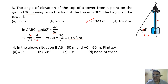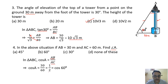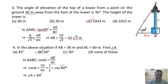Question 4: AB = 30 meter and AC = 60 meter. Opposite and hypotenuse are given, and we need angle A. With respect to angle A, AB is adjacent and AC is hypotenuse, so we use cos A = AB/AC = 30/60 = 1/2. Since cos 60° = 1/2, angle A = 60 degrees. The correct option is option B.